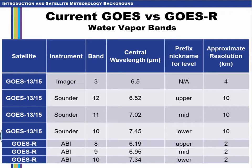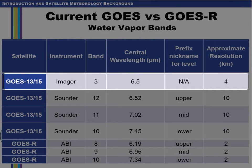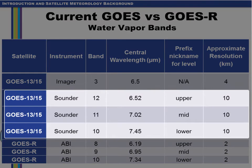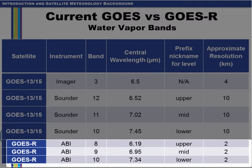This slide illustrates water vapor bands available on the current GOES satellite imager and sounder instruments and compares them with what will be available on the GOES-R ABI instrument. The water vapor band on the Imager for the current GOES satellites is centered at 6.5 microns with a resolution at nadir of 4 kilometers. The sounder instrument has three water vapor bands but with a resolution of only about 10 kilometers. On the GOES-R ABI instrument, there will be three water vapor channels: Band 8 centered at 6.19 microns, band 9 at 6.95 microns, and band 10 at 7.34 microns. The motivation in having three water vapor channels is to provide a better three-dimensional view of the atmosphere.